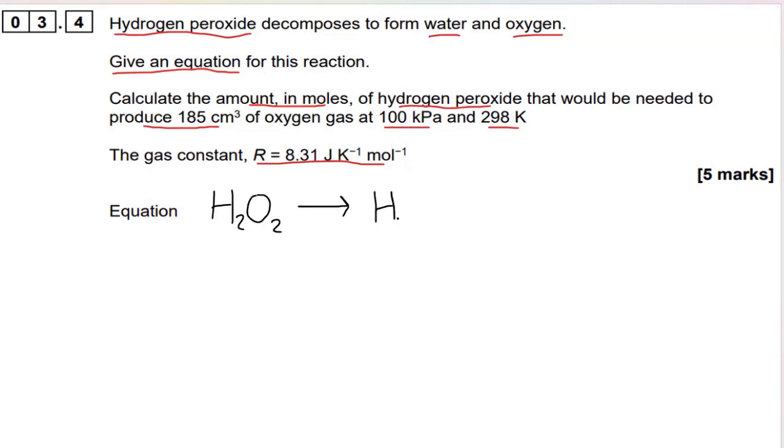All right, let's write out this balanced equation. H2O2, that's the formula for hydrogen peroxide, and it forms water and oxygen, we're told here in the question. And we need to quickly balance this up. So our coefficients, two of these, and this is nicely balanced. That's going to get us one mark out the five marks.